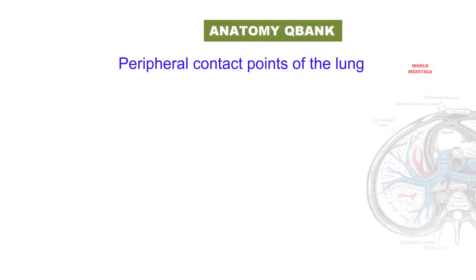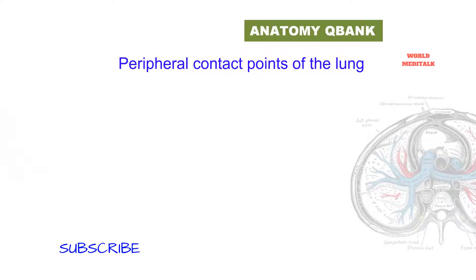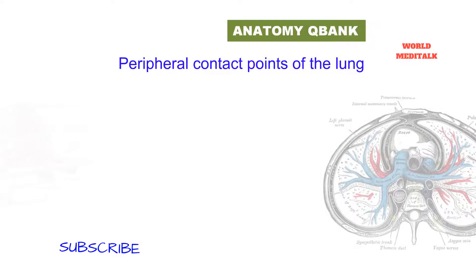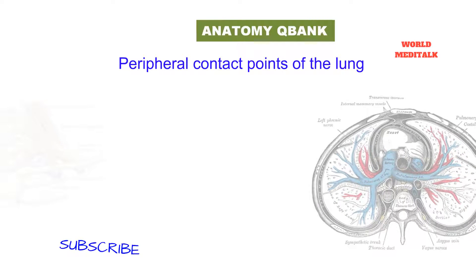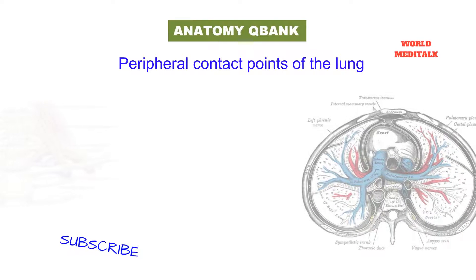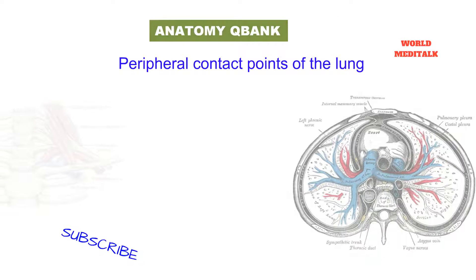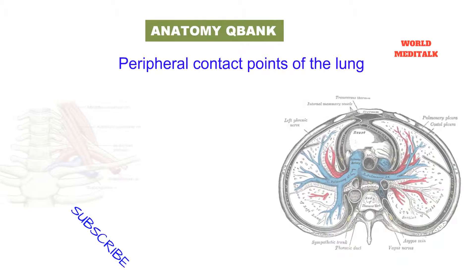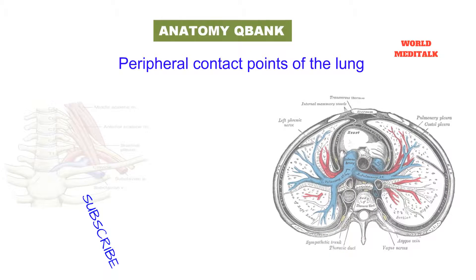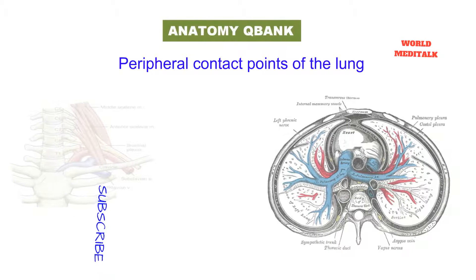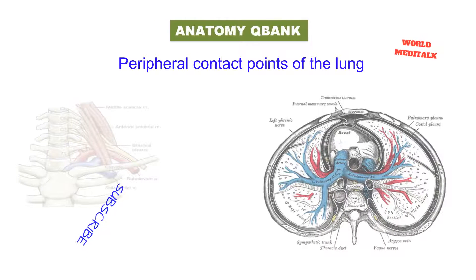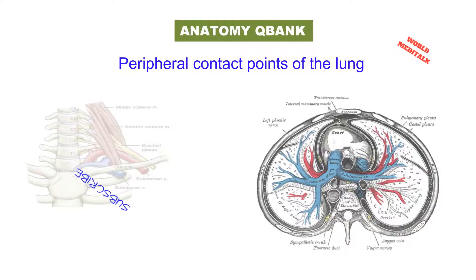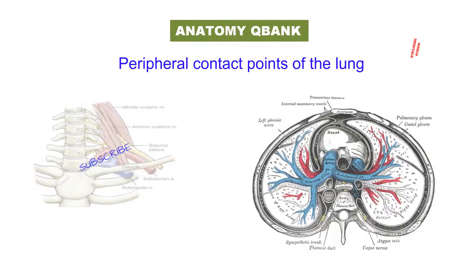Peripheral contact points of the lung: at the base there is the diaphragm; the costal surface corresponds to the cavity of the chest; the mediastinal surface contacts the mediastinal pleura and has the cardiac impression. Above and behind the concavity is a triangular depression named the hilum.